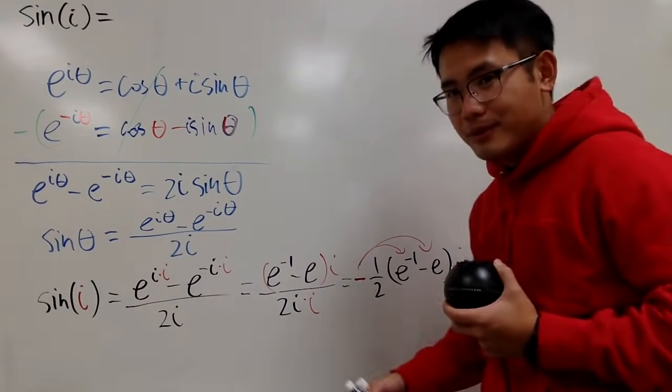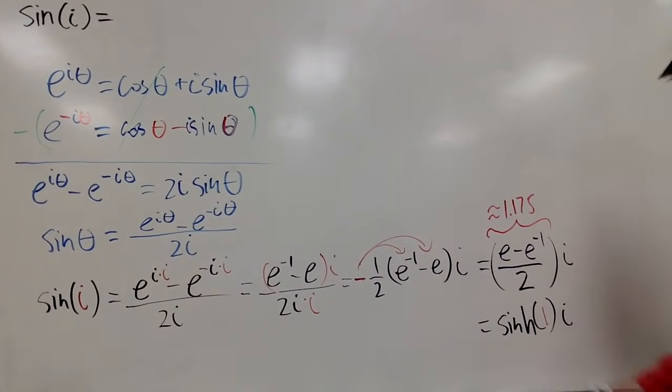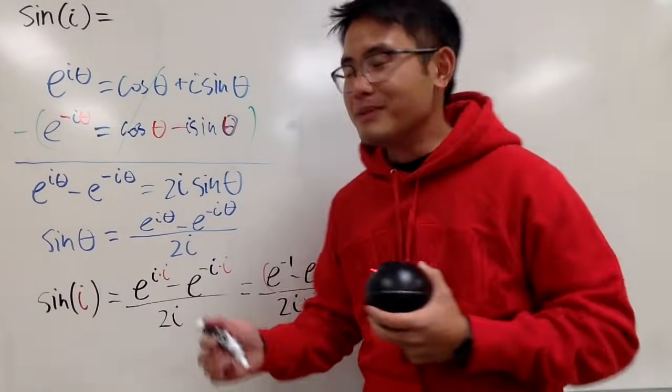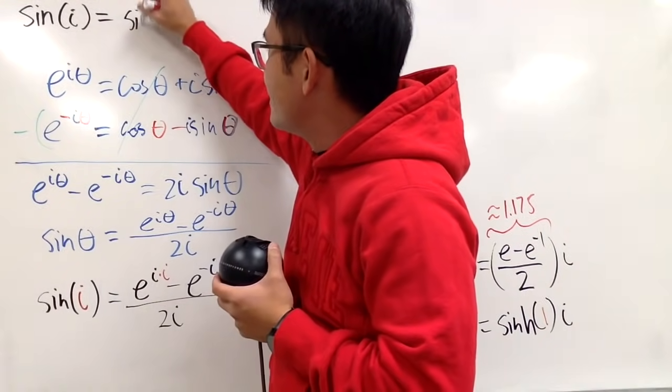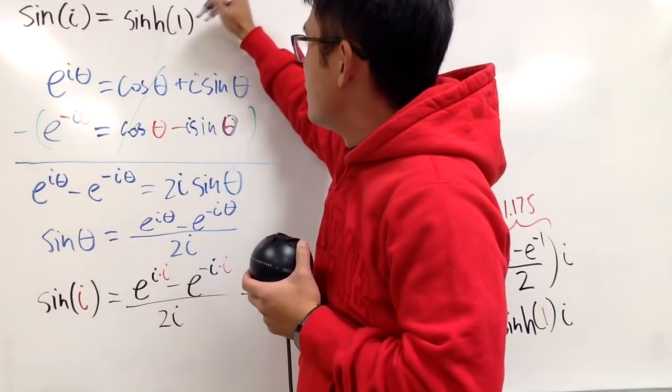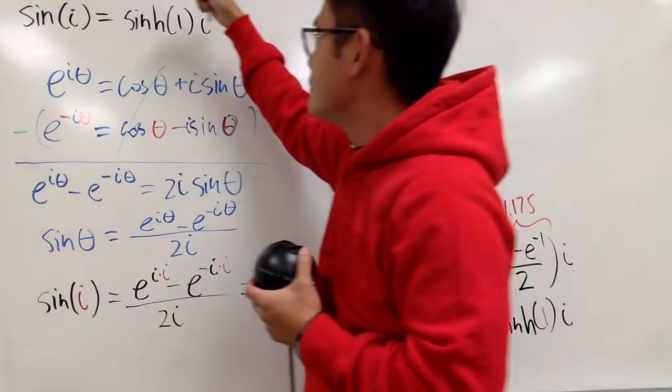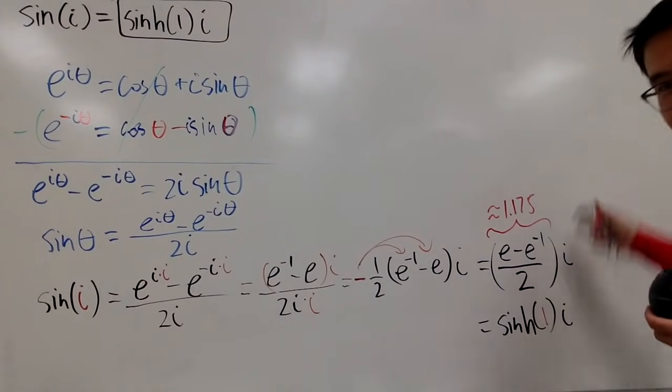So what is sine of i, depending on which one you want? So perhaps just to impress you guys, I'll just write this down. Sinh of 1 times i. So this is kind of cool. All right, like that. Yeah. So I'll just box this. That's it.